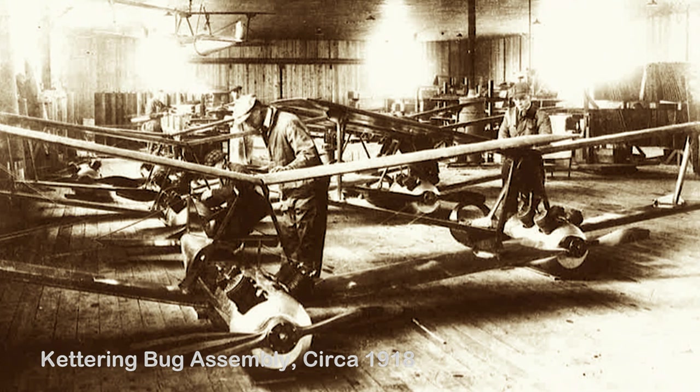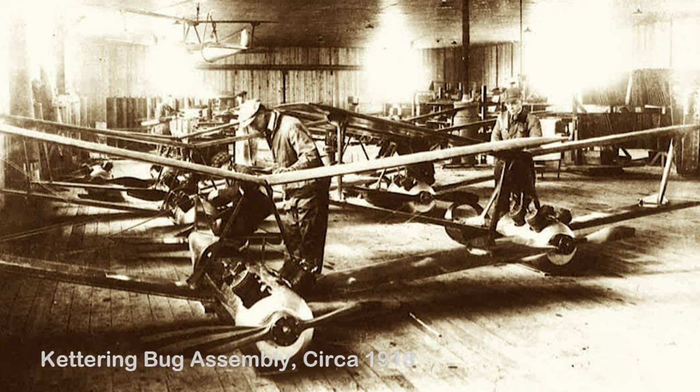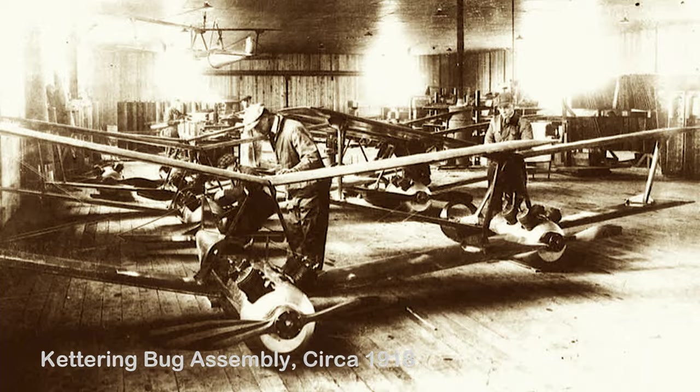Nevertheless, the program would come to an end, but similarities to the Kettering bug's construction would be seen in the German V-1 rocket decades later. Germany would launch 10,000 unmanned pilotless V-1 missiles against London in a 10-month period spanning 1944 and 1945. The autopilot was a critical technology that allowed this flying bomb to maintain its course.